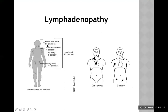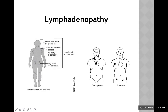Head and neck lymphadenopathy accounts for 55% of cases, supraclavicular around 1%, axillary 5%, and inguinal 14%. So cervical lymphadenopathy is the commonest presentation in the hospital or clinic. For the definition of generalized lymphadenopathy, it should be non-contiguous in two or more different areas — this is the diffuse type. Contiguous lymph nodes adjacent to each other are considered part of localized lymphadenopathy.